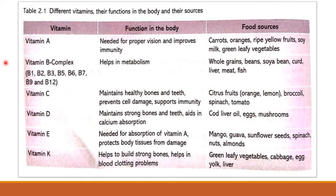Now we will see a diagram about different vitamins, their functions in the body and their sources. First, vitamin A — it is needed for proper vision and improves immunity. If we eat vitamin A, our eyesight will be good and our immunity, meaning our resistance to disease from outside, will be stronger so we won't get sick quickly.